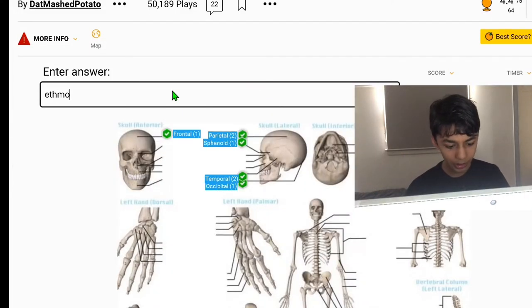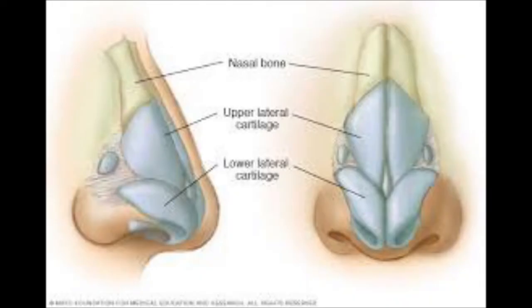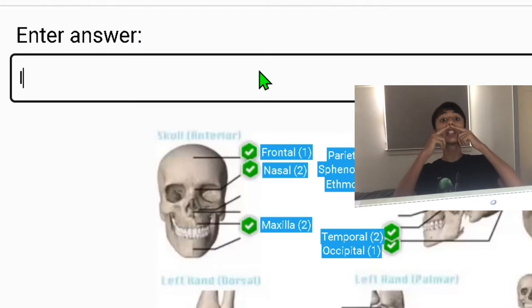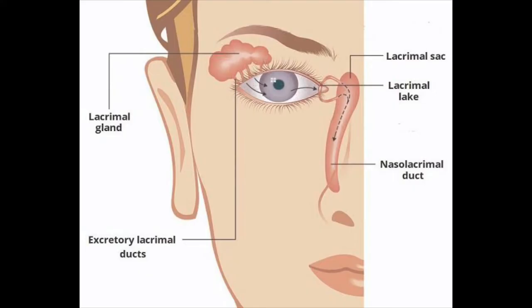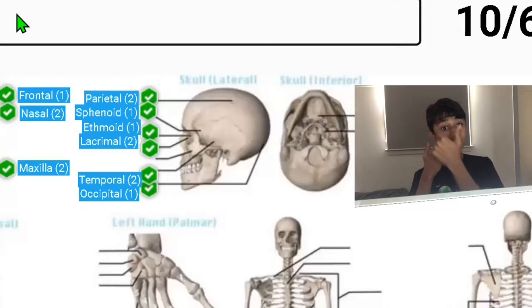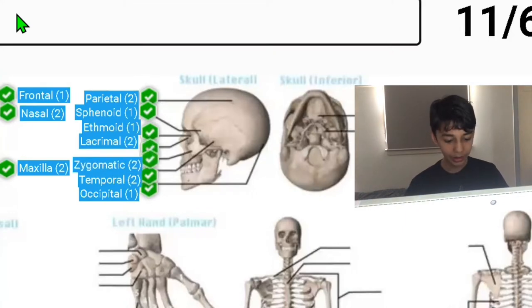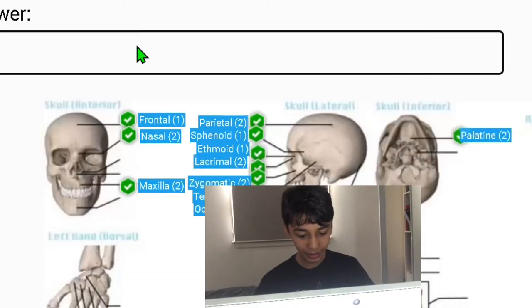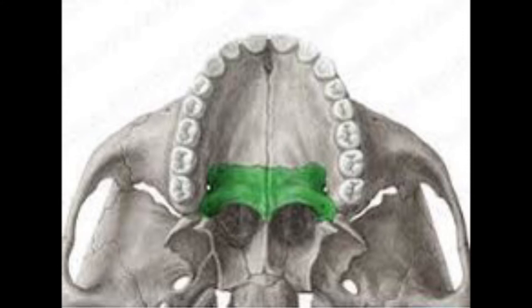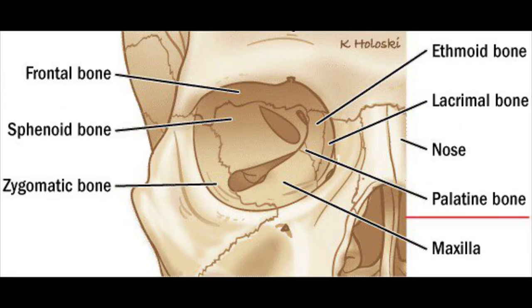Nasal which forms the external surface of the nasal cavity, maxilla which houses your teeth in the upper jaw, lacrimal which supports the lacrimal apparatus, basically the gland which secretes tears. Zygomatic palatine which builds oral nasal and orbit cavities.